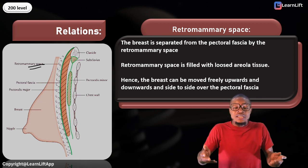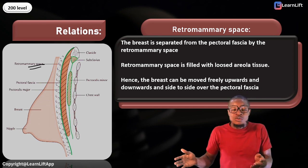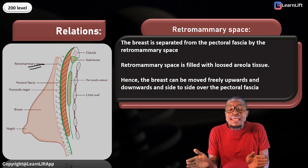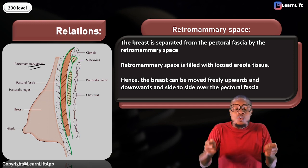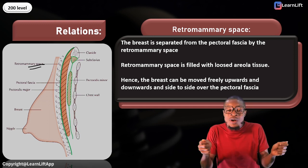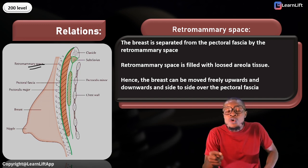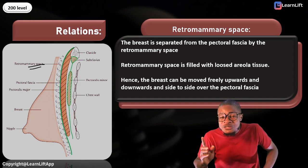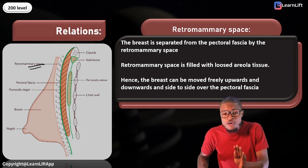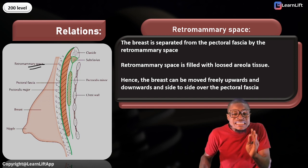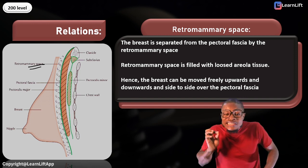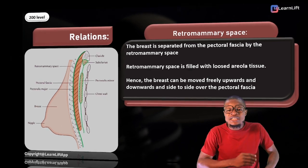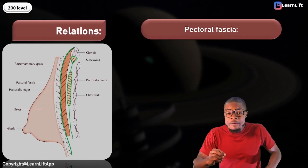Because of the retromammary space, the breast can move upwards, downwards, and sideways. It is the retromammary space that allows this mobility rather than the breast being stiff. Don't forget that the retromammary space is filled with loose areolar tissues, also called fibro-fatty tissues.